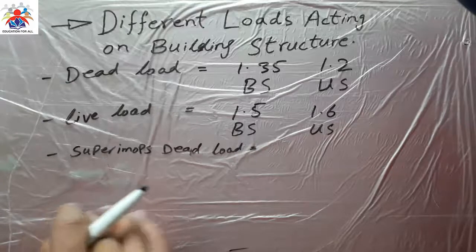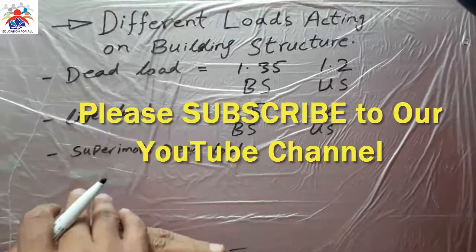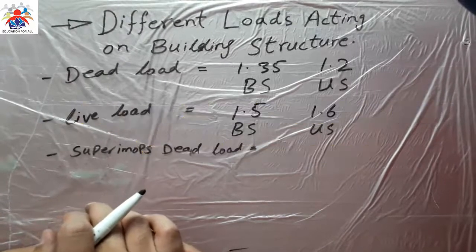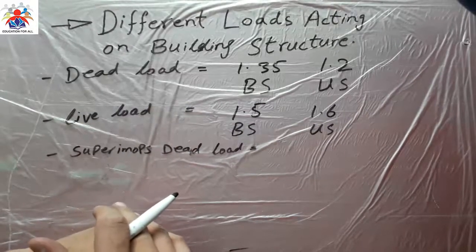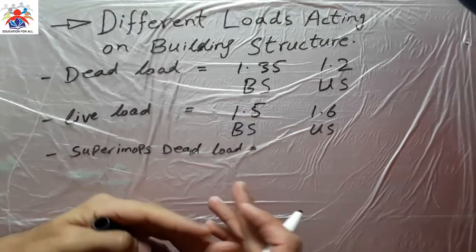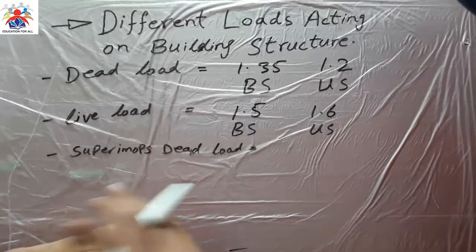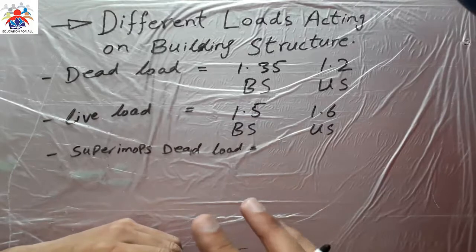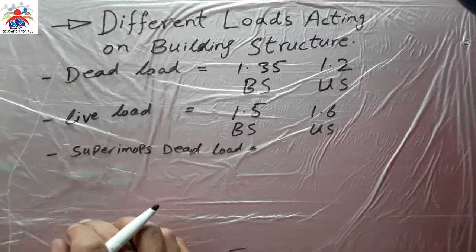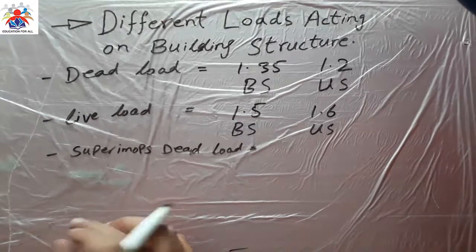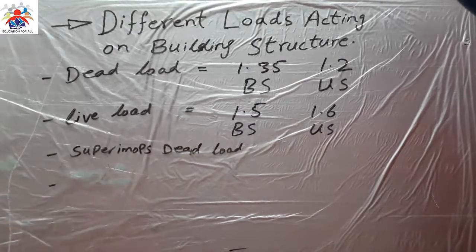For example, if you have built a building but later you decided to add some partition walls, some washrooms, or a kitchen area. Whatever load comes after the construction or after completion of the building, that is called superimposed dead load.